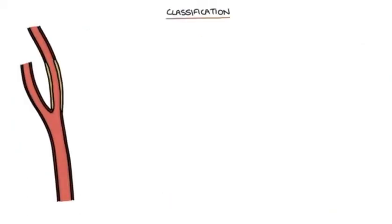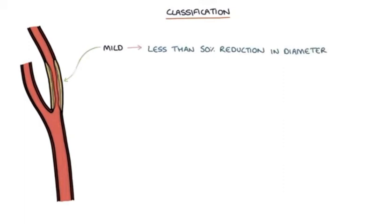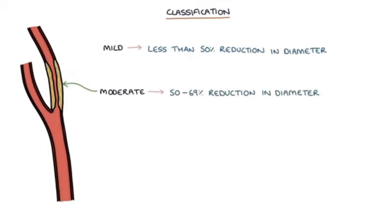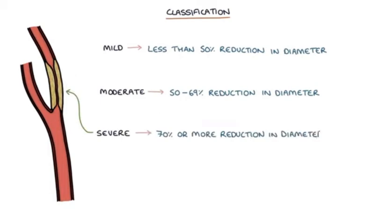The severity of carotid artery stenosis is categorized as mild when there is less than a 50% reduction in diameter, moderate when there is a 50 to 69% reduction in diameter, and severe when there is a 70% or more reduction in diameter.